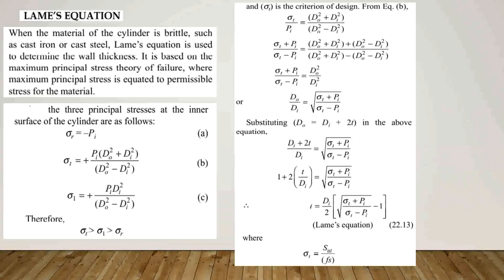Rearranging equation B for sigma-T: sigma-T divided by PI equals (DO² plus DI²) divided by (DO² minus DI²).